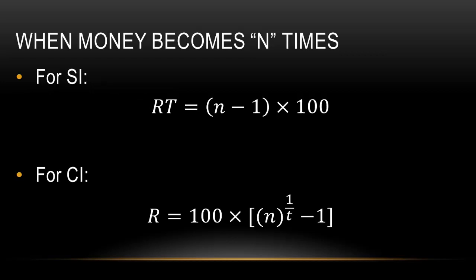The next trick is for questions based on money becoming n times. There are two formulas — one for simple interest and one for compound interest. Suppose in simple interest a principal becomes 4 times in 6 years and you need the rate of interest. Use the shortcut: n − 1 = 3, so r × t = 3 × 100 = 300, and dividing by 6 years gives a rate of 50%.